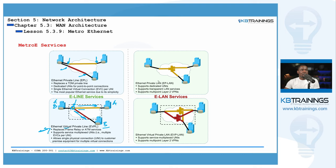For the LAN services: with EPLAN, different UNIs are all connected to a single EVC and can see each other, with one subscriber per UNI. With EVPLAN, multiple subscribers or services share a single UNI with EVCs separated by VLANs, ensuring that traffic from one customer cannot collide with another customer's traffic.